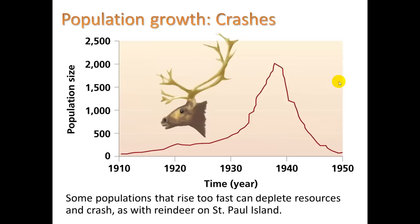We also see population crashes. This happened on St. Paul Island with reindeer introduced in the early 1900s. Their population was basically increasing exponentially — you can see the J-curve take off — but then it crashed as they depleted their resources, probably the vegetation they were eating.